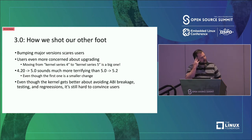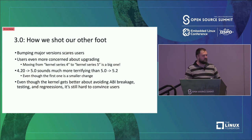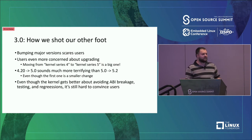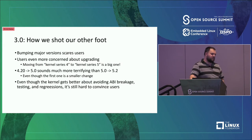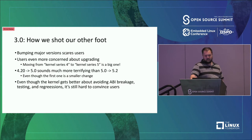Moving major versions is scary: 4.20 to 5.0 is just one version, and 5.0 to 5.2 is two versions. Yet the perception is that 5.0 to 5.2 is much easier than 4.20 to 5.0, which is confusing and doesn't match the kernel's release process. Even though we have better testing, we're better at not breaking user space and good at catching performance regressions — all the pieces are there to allow customers to migrate faster — but we're still not selling what we're actually doing.